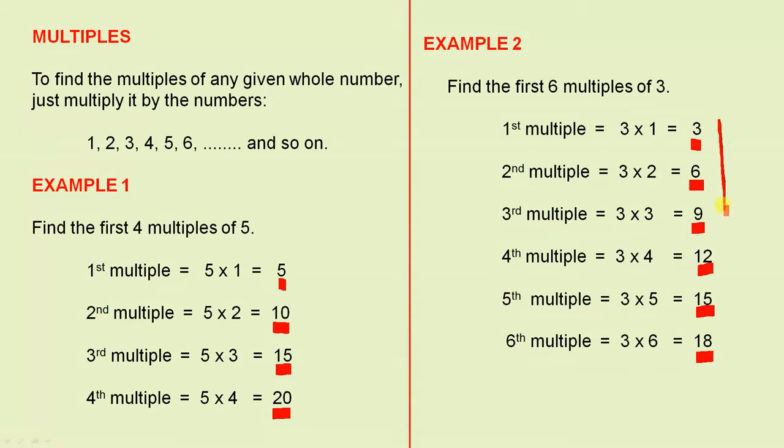So the numbers in the last column that are underlined, they are the first six multiples of 3.